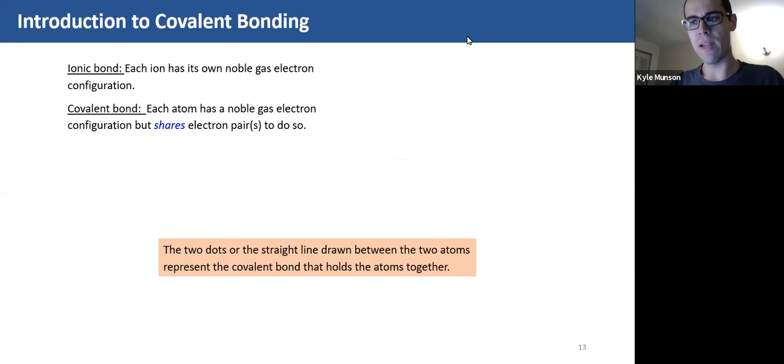So in ionic bonding, each ion has its own noble gas electron configuration. So for sodium and chlorine, if you go back to the other video, we saw that when sodium loses an electron, it gets a noble gas configuration. And when chlorine gains an electron, it gets a noble gas configuration. So one is gaining an electron, one is losing an electron. They're both now in stable noble gas configuration.